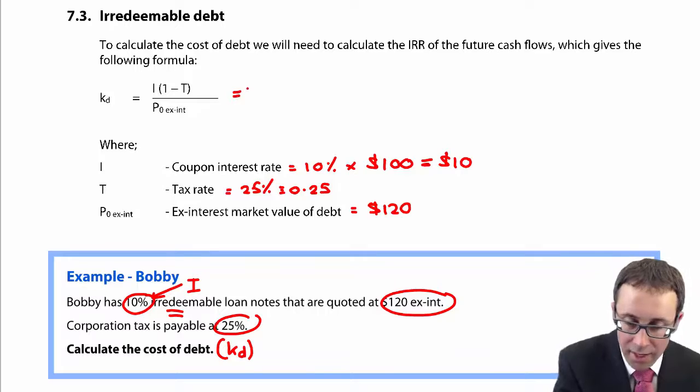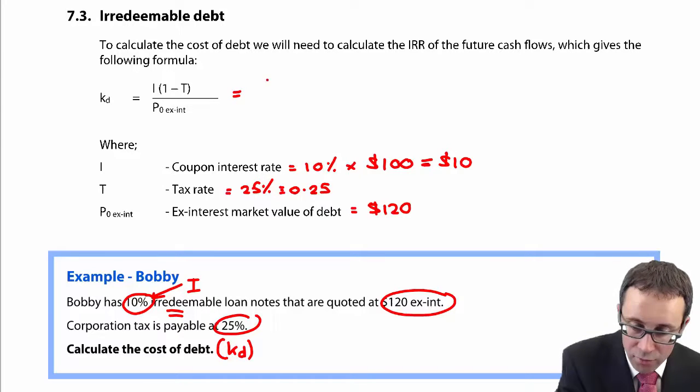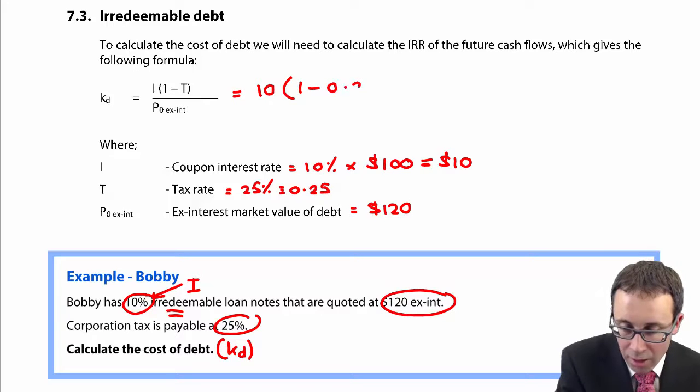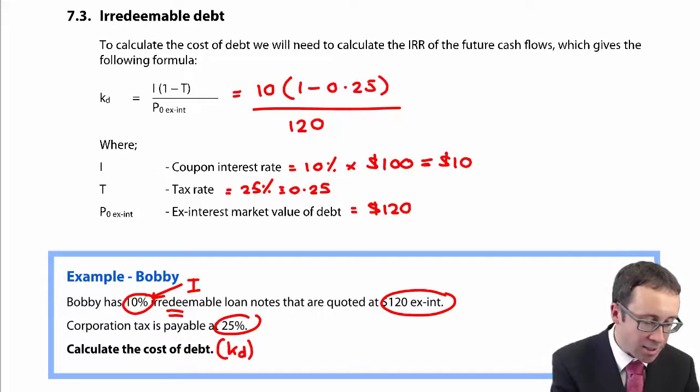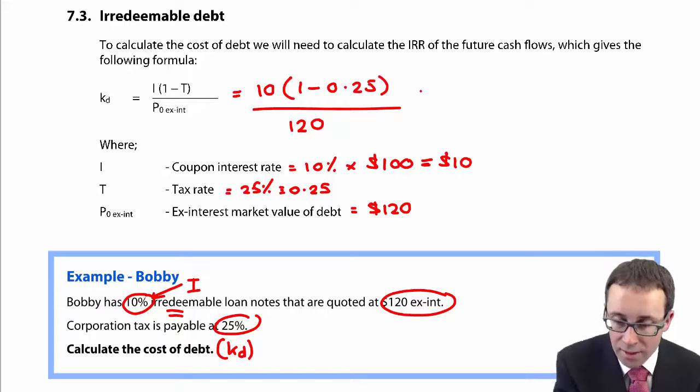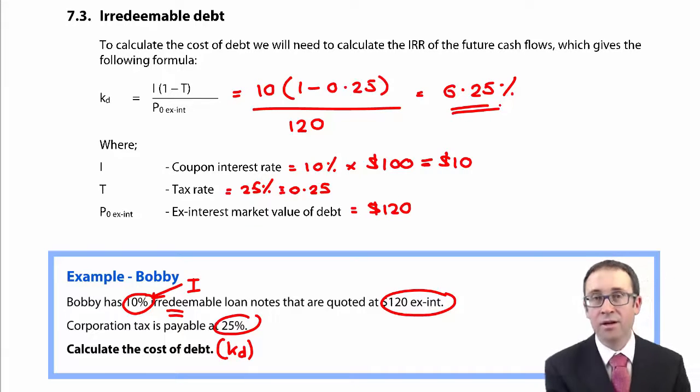So to work out the cost of debt, we go through there and take the $10. We multiply by one less the 0.25. We divide by the market value ex-interest, which is $120. Obviously multiply it by 100% to convert it into a percentage. And that gives you 6.25%. It is as easy as that.